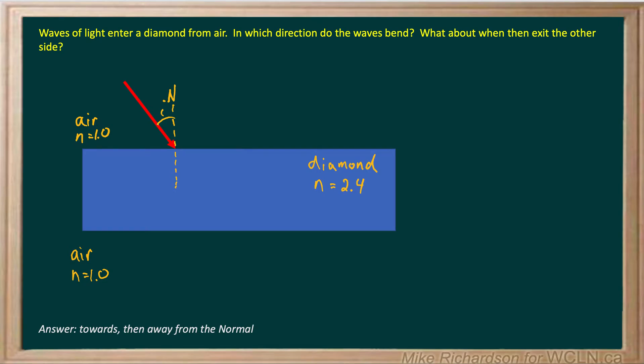Waves of light enter a diamond from air. In what direction do the waves bend? I've drawn a ray of light. Imagine that's a laser beam traveling down and hitting the surface of the diamond.